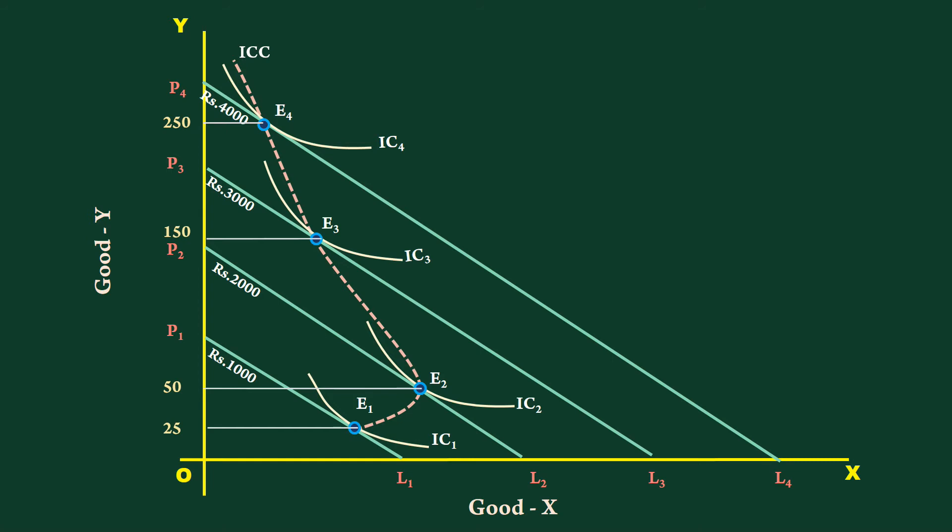In case of good Y, there is positive relation between income and quantity. A good whose quantity demanded is positively related to income is called normal good. In our discussion, good Y is a normal good.